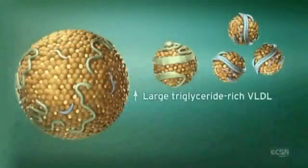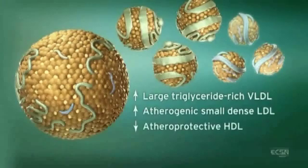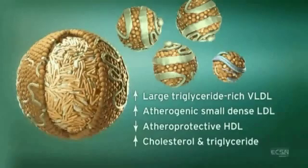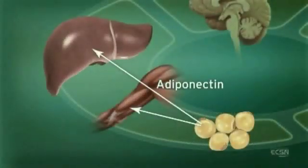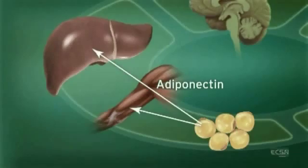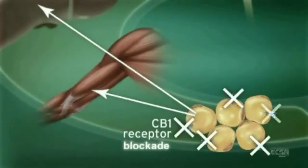Large triglyceride-rich VLDL sets the stage for the atherogenic lipid profile of small dense LDL, decreased levels of athero-protective HDL, and overall increases in cholesterol and triglyceride levels. Adiponectin, another hormone secreted by adipocytes, regulates lipid and glucose metabolism. Adiponectin is believed to regulate fatty acid oxidation in muscle and liver, thus improving insulin sensitivity. CB1 receptor stimulation in adipocytes reduces adiponectin, while CB1 blockade increases adiponectin synthesis.